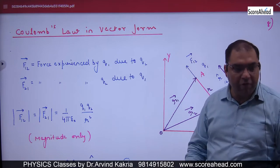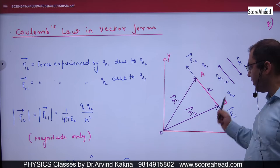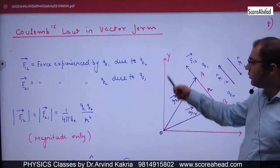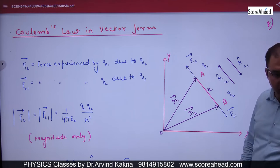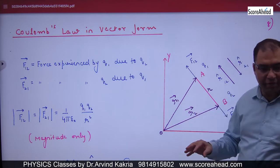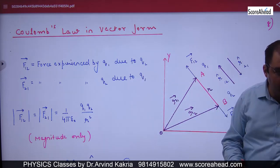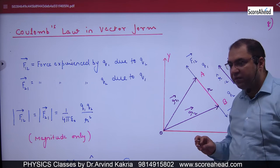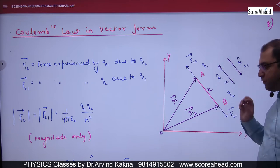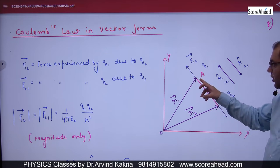Take two charges Q1 and Q2 separated by a distance R. Take the xy plane and xy axis. A position vector represents the position of a charge. R1 vector is the position vector of charge Q1, and R2 vector is the position vector of charge Q2.